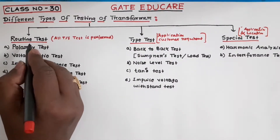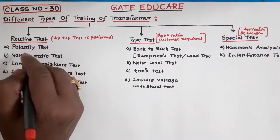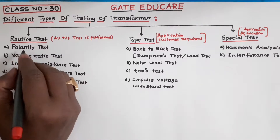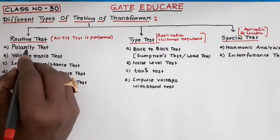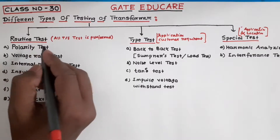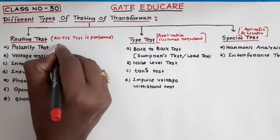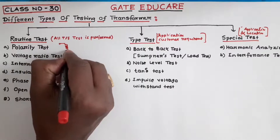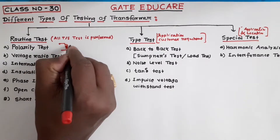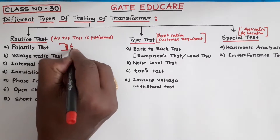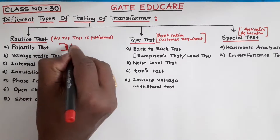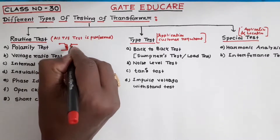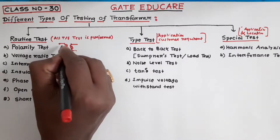Now starting with the routine test. The first routine test is the polarity test. This test is performed to know the polarity of the winding. Suppose this is the primary winding and this is the secondary winding.